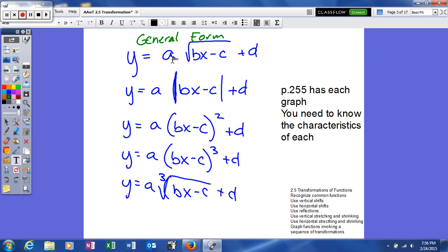A is the coefficient of your parent function. It's the number that's being multiplied on the outside of your parent function. B is the coefficient of your variable X before you do your parent function - the coefficient of X before we take the square root, before we take the absolute value, before we square it.